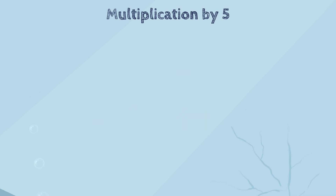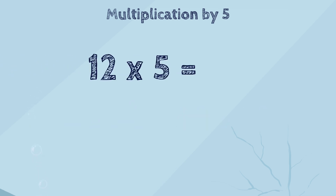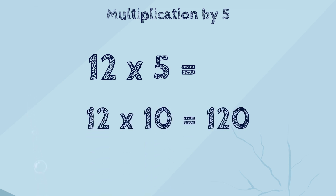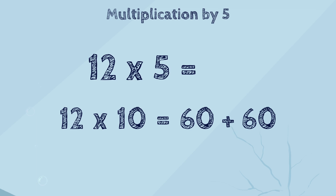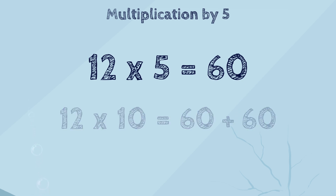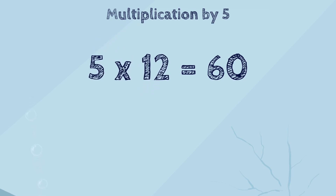Let's try one more problem: twelve times five. We can easily figure out that twelve times ten is one hundred and twenty. And then what is half of one hundred and twenty? It's sixty. Yes, that's right. So twelve times five is sixty. As always, we remember that the order of the numbers doesn't change the answer in multiplication, so it doesn't matter if five is the first or the second number — this trick can still be used.